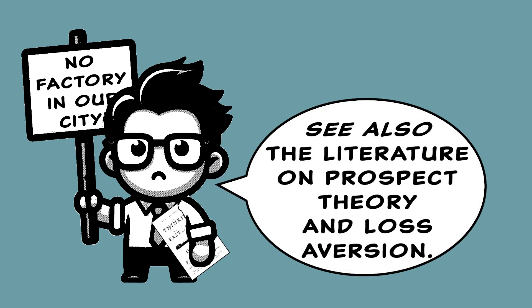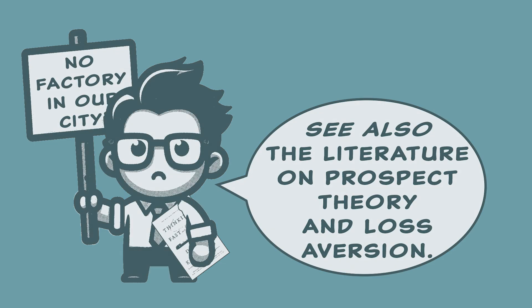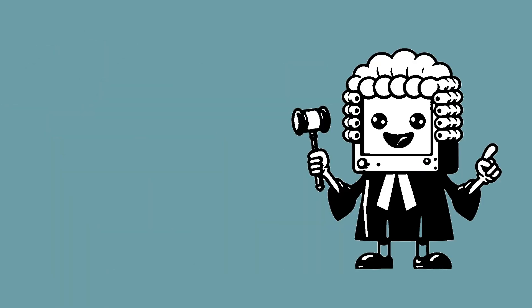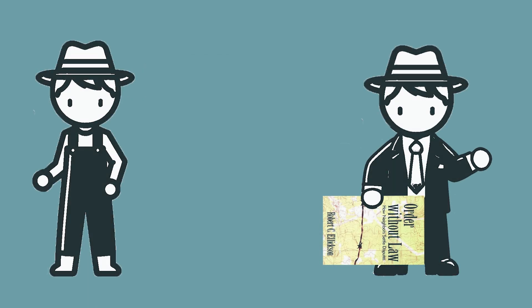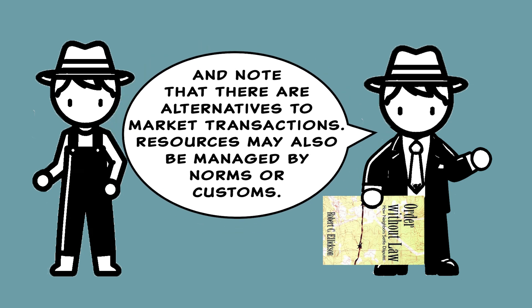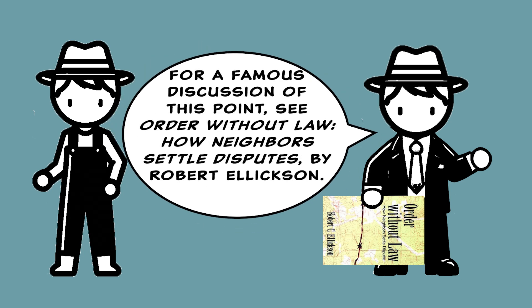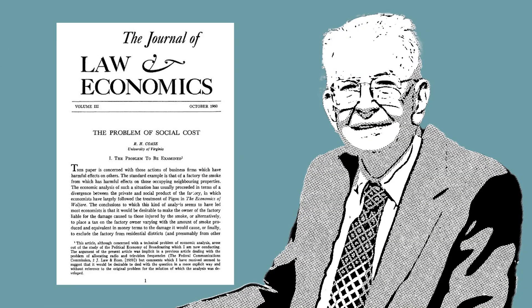All that said, Coase's article reminds us that there's a value to clarity in property rights and the possibility that market mechanisms may sometimes — by no means always, but sometimes — be preferable to judicial allocations, that people can reach agreeable outcomes without judicial interventions. The Coase Theorem is therefore an idea worth understanding as part of any lawyer's conceptual toolkit, even if it doesn't change your mind about any particular legal question.